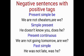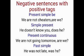Now let's have some negative sentences with positive tags. Present simple (be): 'We are not cheaters, are we?' Present simple (other verbs): 'He doesn't know you, does he?' Present continuous: 'We are not going tomorrow, are we?' Past simple (be): 'He was not late, was he?' Past simple (other verbs): 'You didn't kill a lion, did you?' Past continuous: 'They weren't laughing, were they?' Present perfect: 'He hasn't watched a movie, has he?'